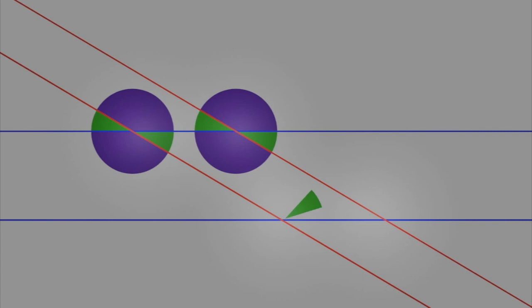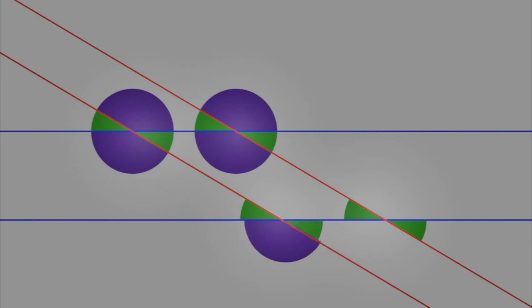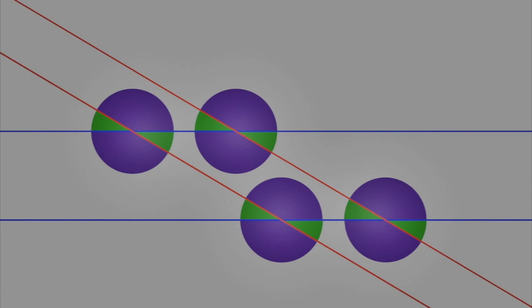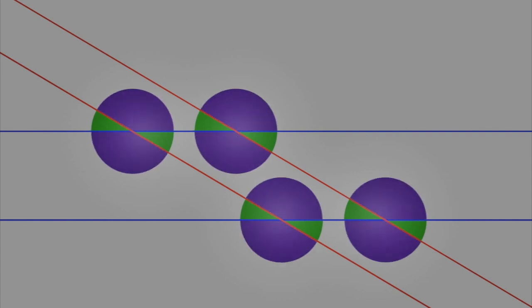And back to the beginning — so all of these angles are equal to each other. The same is true with these angles; they're all equal to each other. In the end, there's only two angles: the green angles and the purple angles.